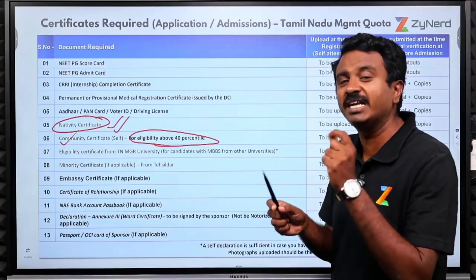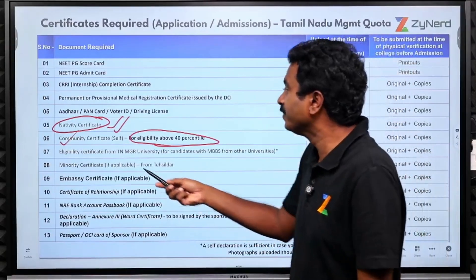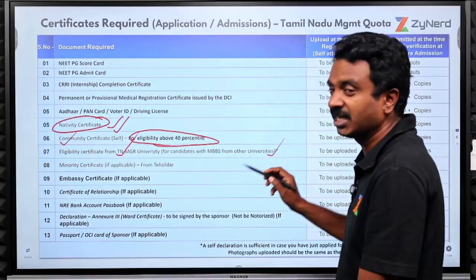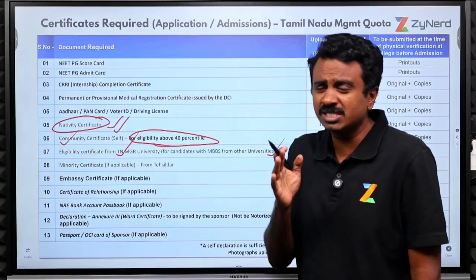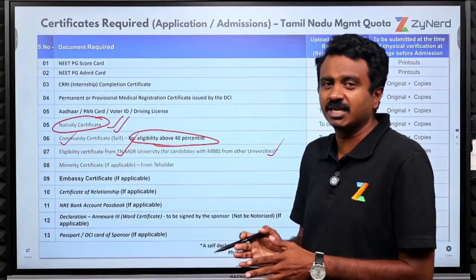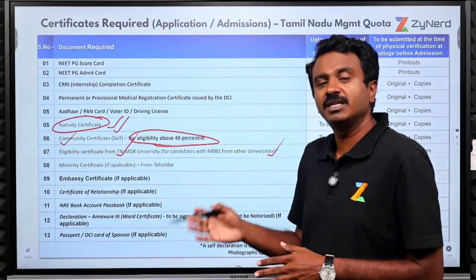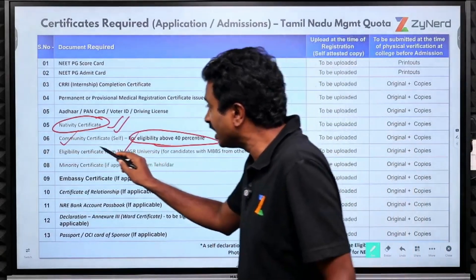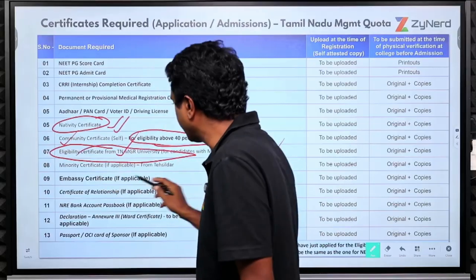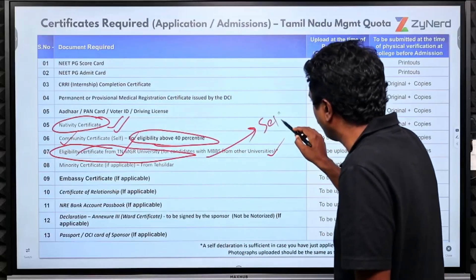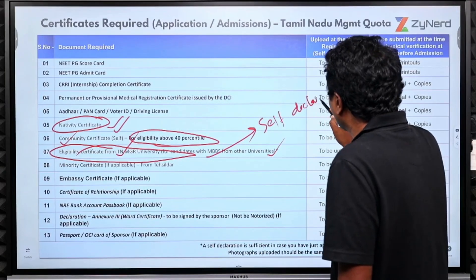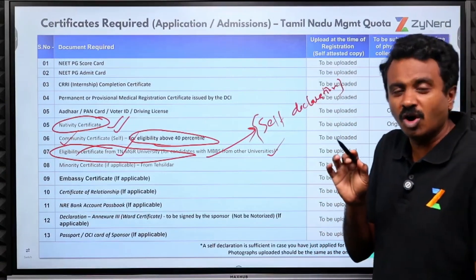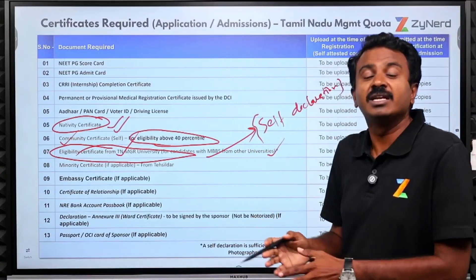An eligibility certificate from TNMGR University is required if you have done your MBBS from other universities — deemed universities in Tamil Nadu such as SRM, Ramachandra, etc. — or from other states. Right now this might not be required immediately. A self-declaration is being allowed, so don't rush to get this eligibility certificate now.